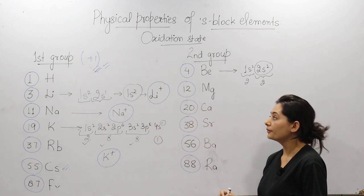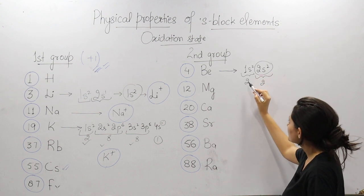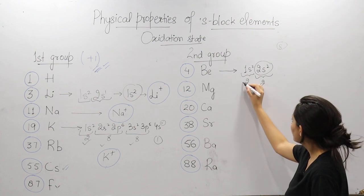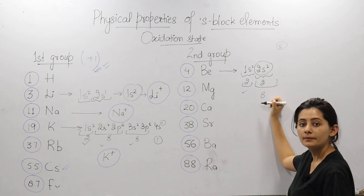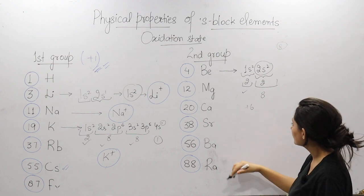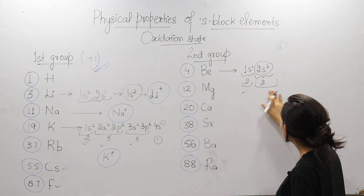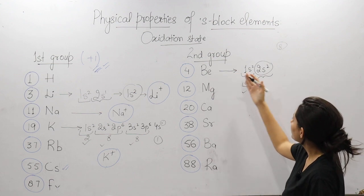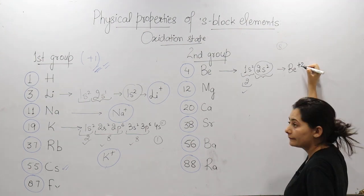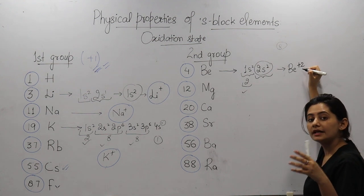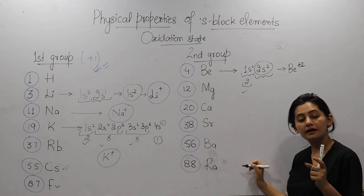Now let's see the second group. Let's take beryllium: 1s2, 2s2. In the first shell there are 2 electrons — stable. In the second shell we need 8 for stability, but we have only 2. There are again two situations: either add 6 electrons or remove 2 electrons. Since removing 2 requires less energy, we remove 2 electrons. So beryllium forms Be²⁺ — the plus sign shows electrons were removed, and 2 shows how many were removed.